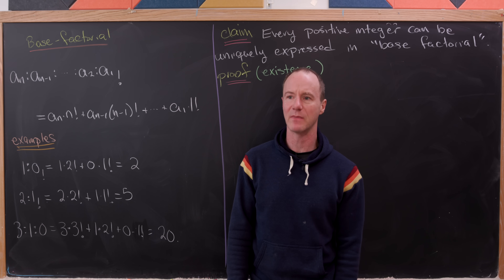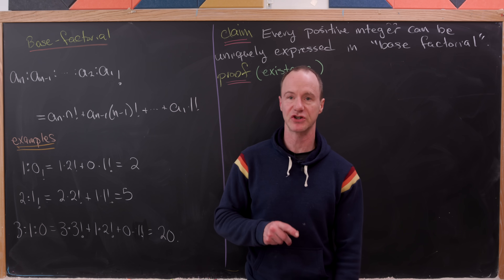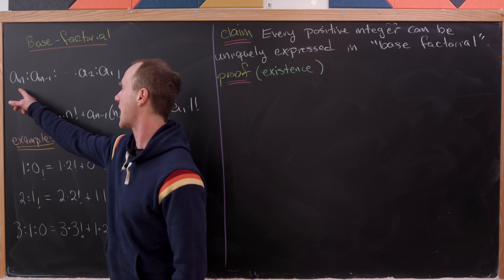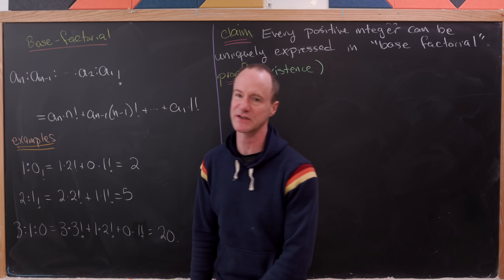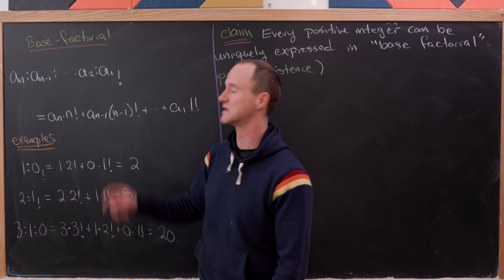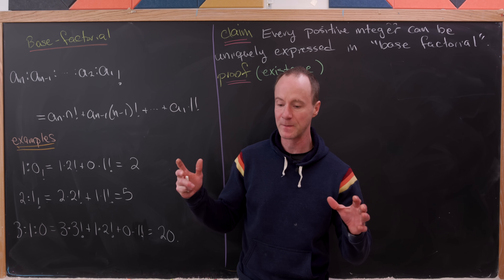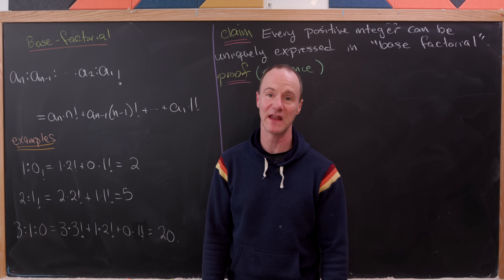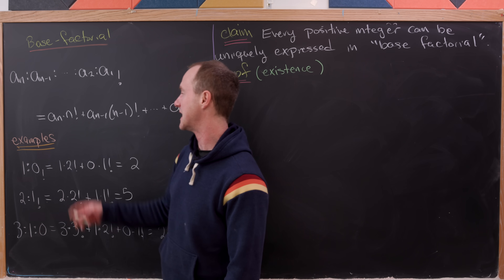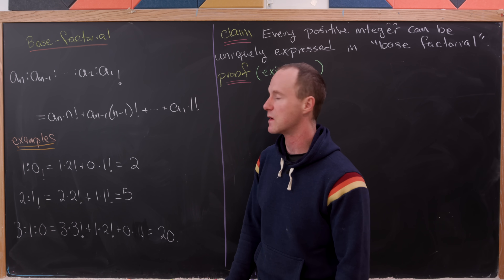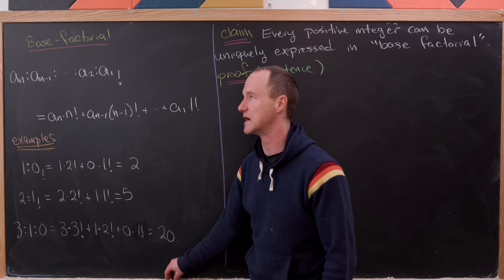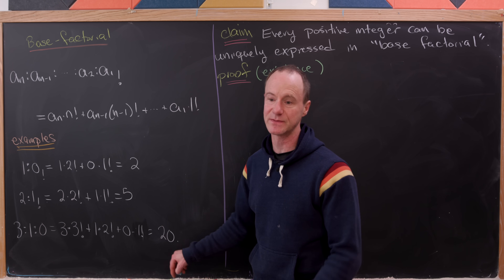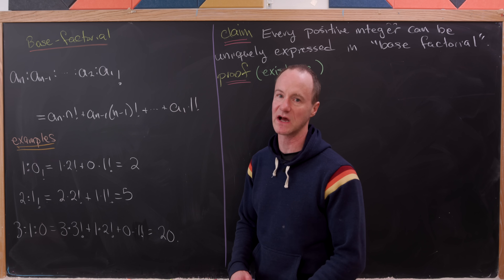So what do I even mean by that? Well, let's look at the definition. So let's take this expression: a_n : a_{n-1} all the way down to a_2 : a_1 sub factorial. That will be a number expressed in this base factorial system, and we're going to set that equal to a_n times n! plus a_{n-1} times (n-1)! all the way down to a_2 times 2! and then a_1 times 1!.